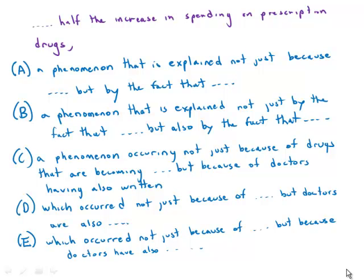This very complex sentence is about parallel structure. We have two explanations for why these drugs cost more: one is the cost of the drugs themselves, and the other is the fact that doctors write a lot of prescriptions for the more expensive drugs. Those two elements have to be in parallel.